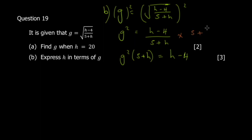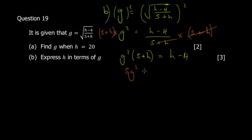Multiply both sides by (5 + h): g²(5 + h) = h - 4. Expand the left side to get 5g² + g²h = h - 4. Now isolate h — collect all h terms on one side.